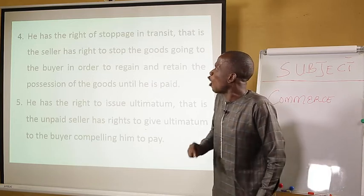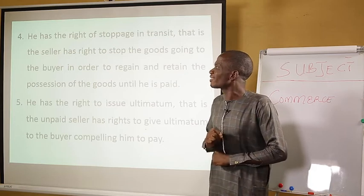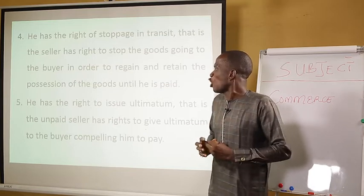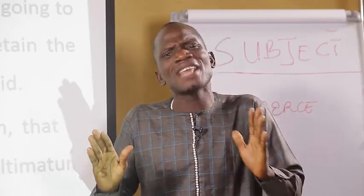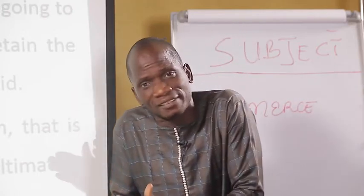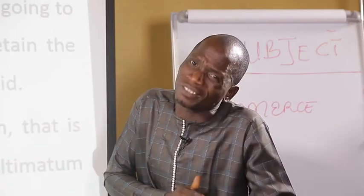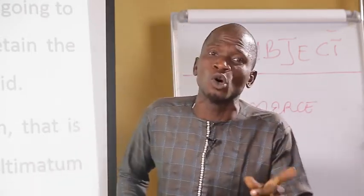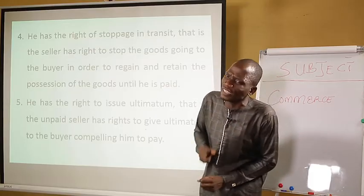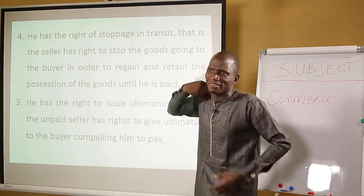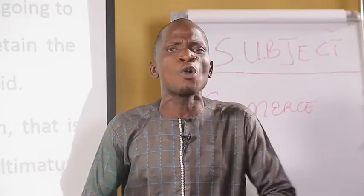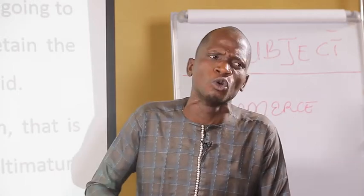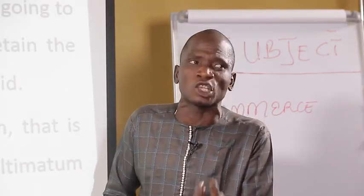The fourth right is he has the right of stoppage in transit. That is, the seller has the right to stop goods going to the buyer in order to retain possession of the goods until he is paid. If there is any disagreement in time of the contract, the agent has a right for stoppage. He can stop the goods from going to the buyer, like in the case of a del credere agent or a factor who is always in possession of goods. When a buyer fails to fulfill his obligations, an agent has a right to stop the goods from reaching the buyer.